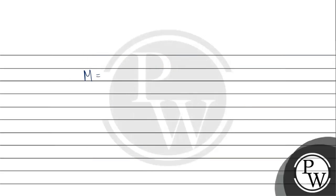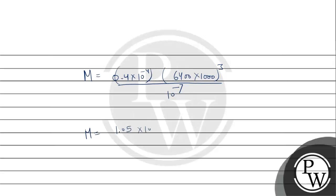Magnetic moment is 0.4 into 10 power minus 4, multiplied by 6400 into 1000 cube, upon 10 power minus 7. Solving this, M equal 1.05 into 10 power 23.